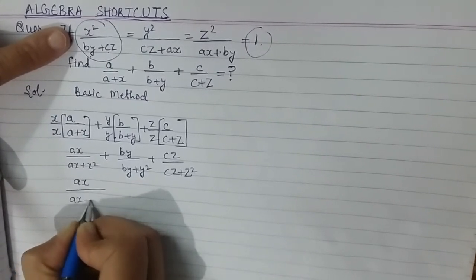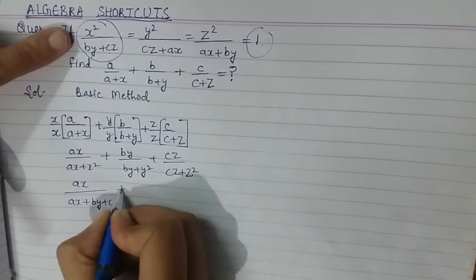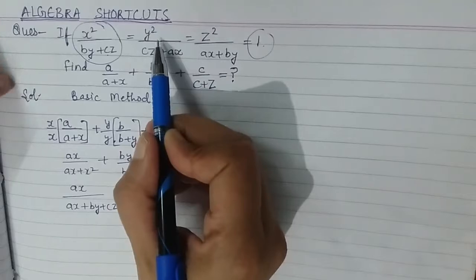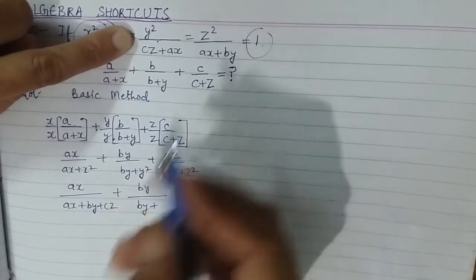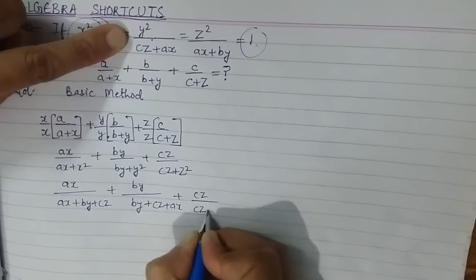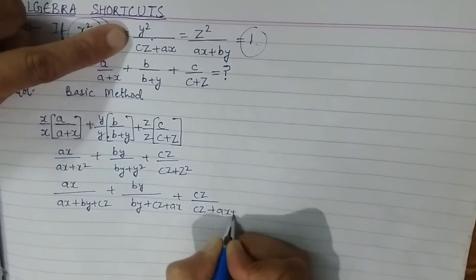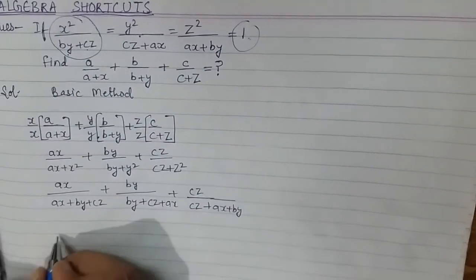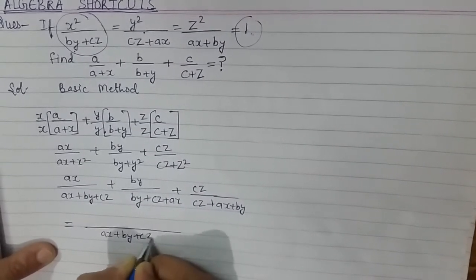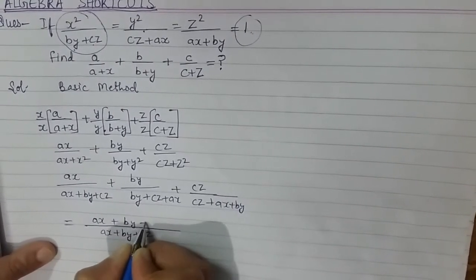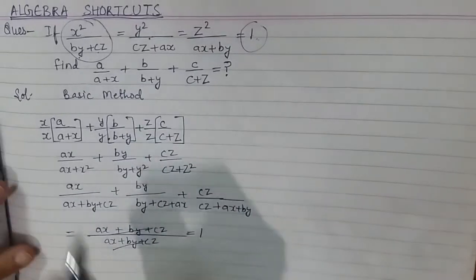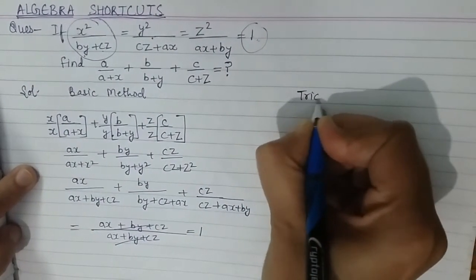Similarly, this expression becomes by divided by (by + cz + ax), because the value of y² is (cz + ax). And for the third term, z² becomes (ax + by), so it becomes cz divided by (cz + ax + by). Now the denominator is the same — we take the LCM, which is (ax + by + cz) — and in the numerator we have ax + by + cz, the same expression. So they cancel and our answer is 1. This is the basic method.